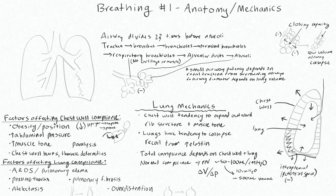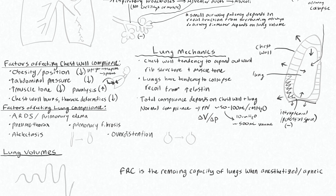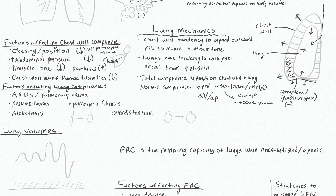Increasing abdominal pressure will obviously decrease your compliance by the same logic. Having high muscle tone will also decrease compliance, because your intercostal muscles and diaphragm will resist the changes caused by positive pressure. Whereas if you have the patient paralyzed, you remove those resistive forces from the muscle and actually increase compliance — you'll get a higher volume return for delivering a certain pressure when the patient is paralyzed. Chest wall burns and thoracic deformities can also decrease chest wall compliance.